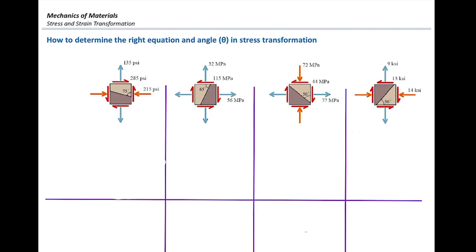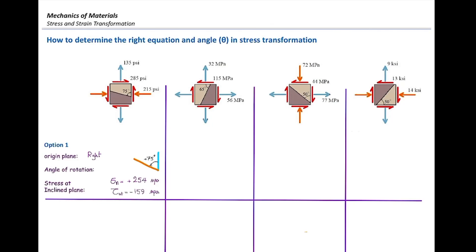I want to determine how much the normal stress and shear stress are on that inclined plane. The first option is considering the right surface and rotating it to get to that inclined plane. If that's the case, I need to rotate 75 degrees counterclockwise. Using sigma_n and plugging in the numbers, that would be 254 MPa. And the shear stress would be negative 159 MPa.